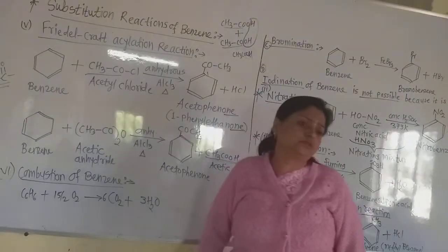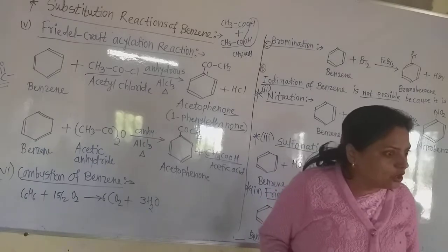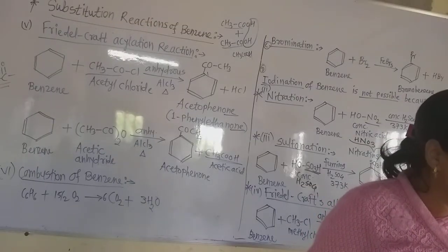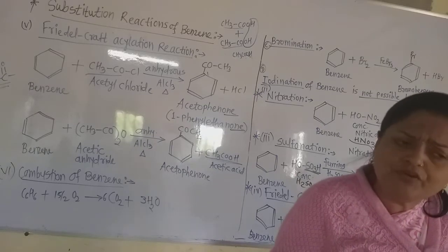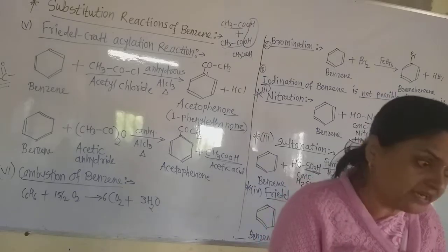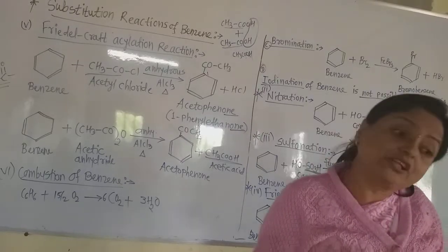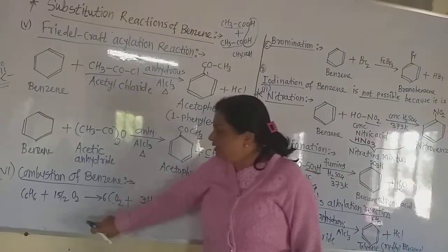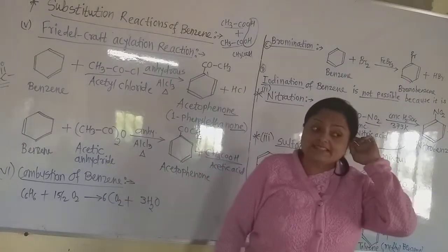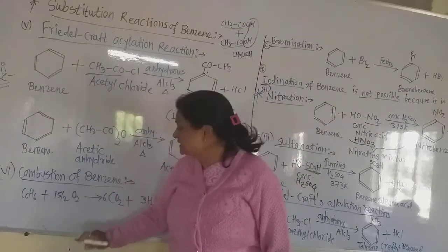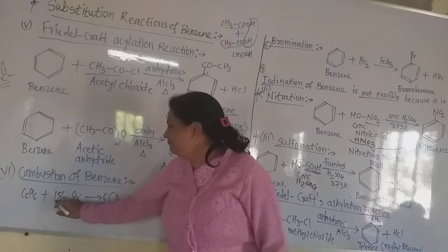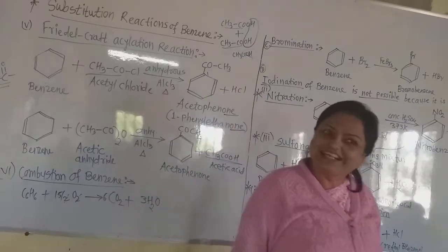Now let us see the last reaction of benzene, that is the combustion of benzene. Combustion means burning, and burning requires oxygen gas. Benzene C6H6 burns with 15/2 O2 molecules — that means 15 oxygen atoms are required. Why 15? Because 6 carbon atoms need 12 oxygen atoms to form 6 CO2 molecules, and 6 hydrogen atoms need 3 oxygen atoms to form 3 water molecules: 12 plus 3 equals 15.